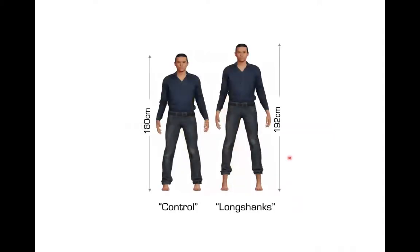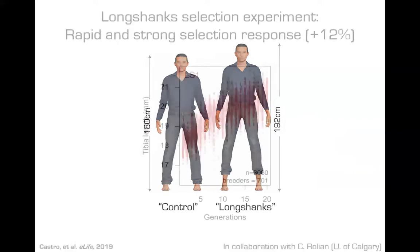This is a drastic increase in tibia length by 12% — about 2 millimeters. To put this in context, if the corresponding changes occurred in a person, a Longshanks human would look something like this. We'd have two problems: the clothes wouldn't fit anymore, and I could really use these extra 12 centimeters myself — though I'll assume you probably don't know that anyway.